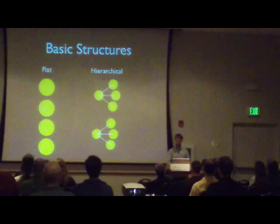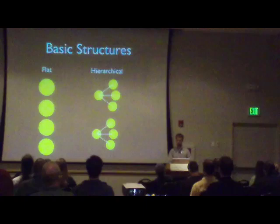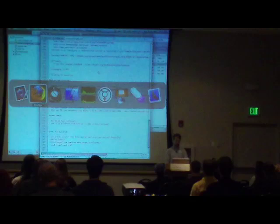I probably don't need to spend much time on this, but you've got some basic structures you can use in taxonomy. Just a flat list, where you simply pick tags or categories, or a hierarchical structure where there's a tree — for example, the top level could be state, and the next level could be counties or cities within the state.